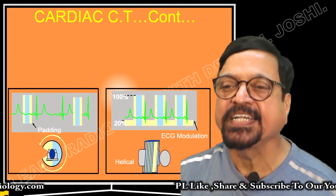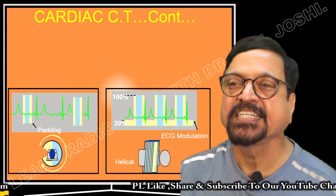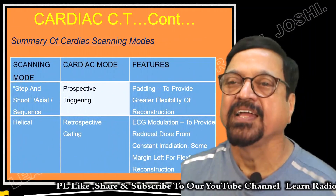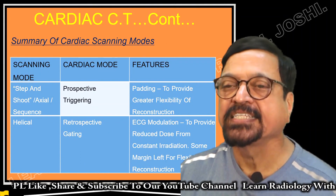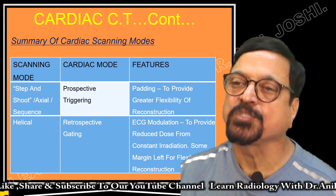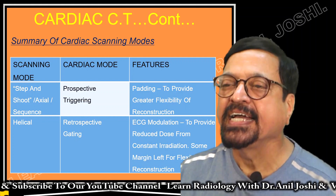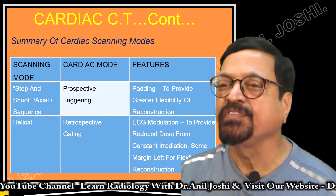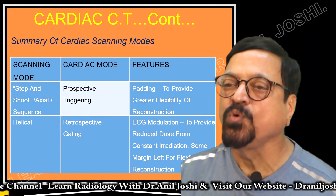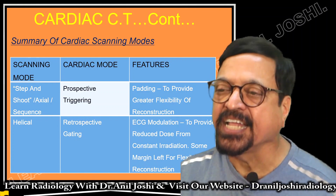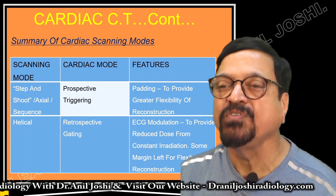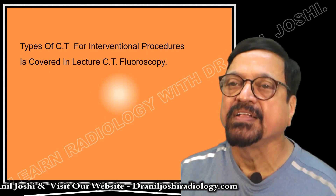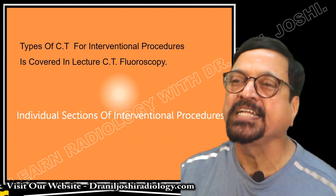To summarize cardiac scanning modes: step-and-shoot axial sequence uses prospective triggering with padding to provide greater flexibility of reconstruction. The secondary helical cardiac mode uses retrospective gating with ECG modulation to reduce dose from constant irradiation, while some margin is left for flexibility of reconstruction. These are the different types of cardiac CT acquisition.